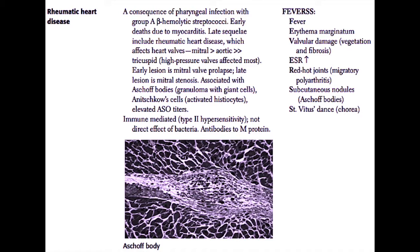Rheumatic heart disease is associated with Aschoff bodies in the myocardium — these are granulomas that contain giant cells and Anitschkow cells, which are activated histiocytes. These patients can be diagnosed by elevated antistreptolysin O titers, meaning they're generating antibodies to a protein made by the bacterium. Remember that rheumatic heart disease is an immune-mediated type 2 hypersensitivity response, and is not due to a direct effect of the bacteria on the heart.